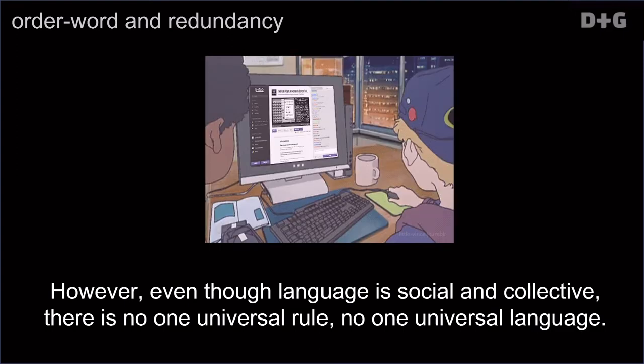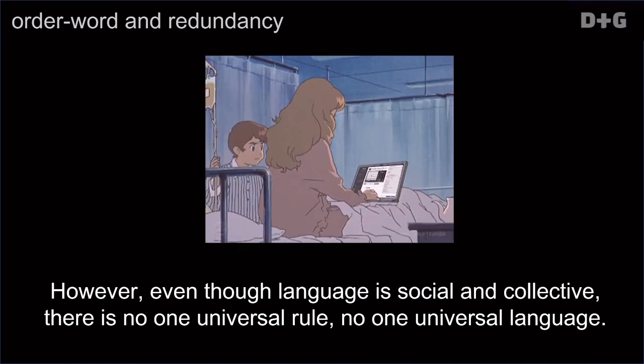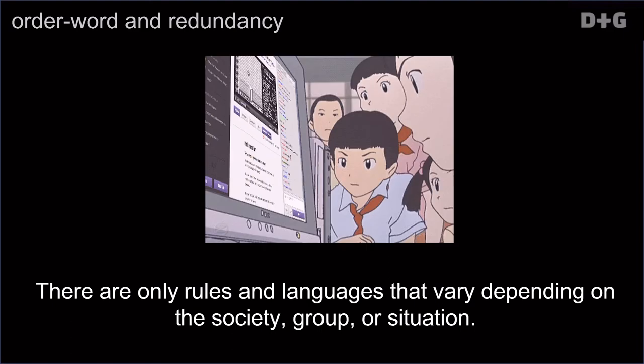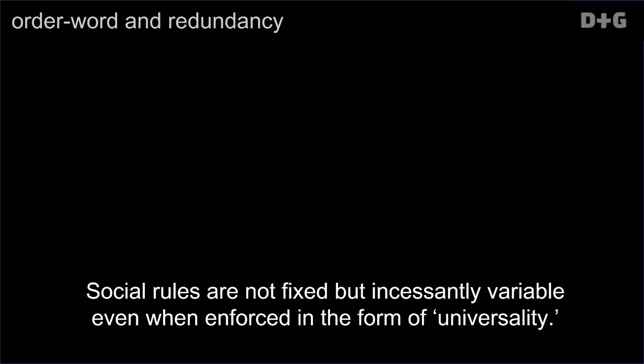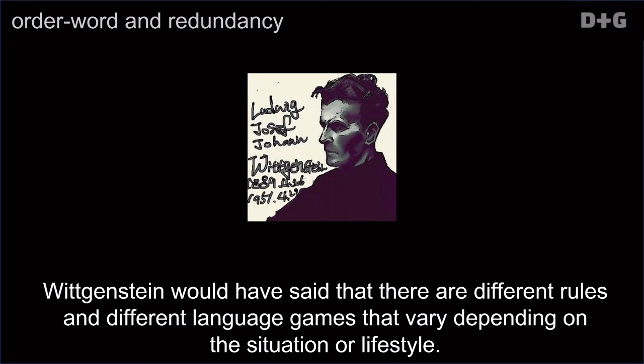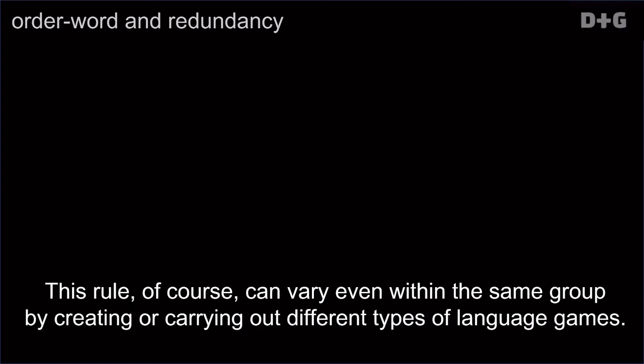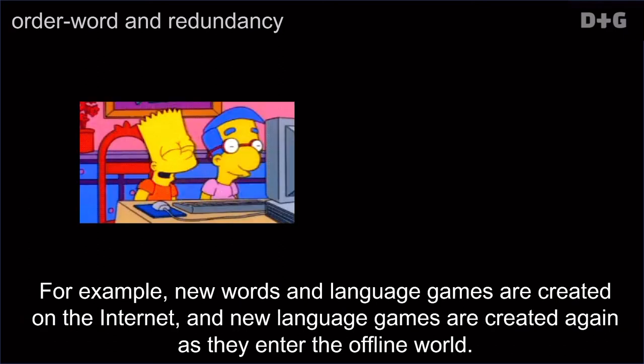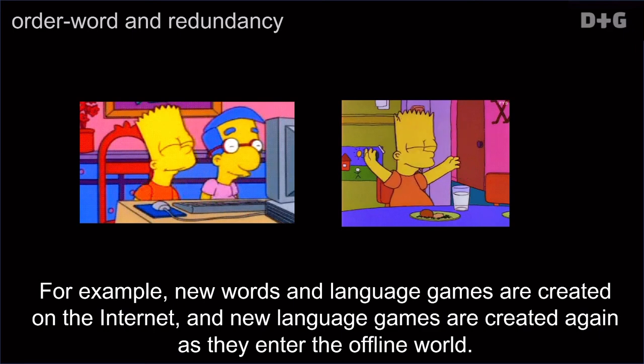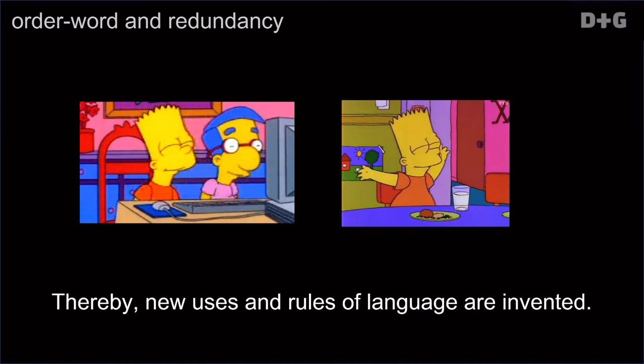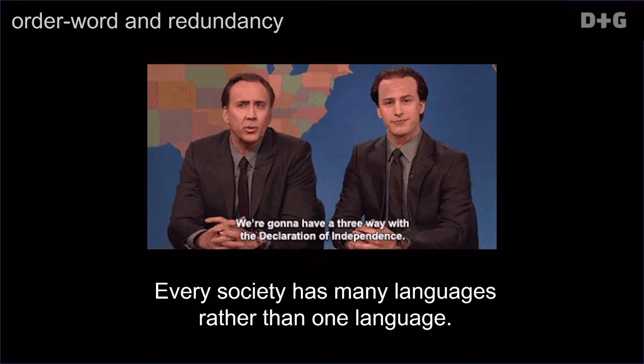However, even though language is social and collective, there is no one universal rule, no one universal language. There are only rules and languages that vary depending on the society, group, or situation. Social rules are not fixed but incessantly variable, even when enforced in the form of universality. Wittgenstein would have said that there are different rules and different language games. They vary depending on the situation or lifestyle. This rule, of course, can vary even within the same group by creating or carrying out different types of language games. For example, new words and language games are created on the Internet, and new language games are created again as they enter the offline world. Thereby, new uses and rules of language are invented. Every society has many languages rather than one language.